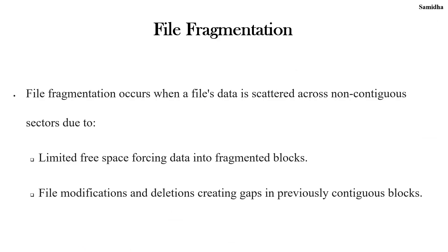File fragmentation occurs when a file's data is scattered across non-contiguous sectors due to limited free space, forcing data into fragmented blocks, file modifications and deletions creating gaps in previously contiguous blocks. File fragmentation is just like a jigsaw puzzle — it occurs when parts of the files are spread or scattered across different locations.